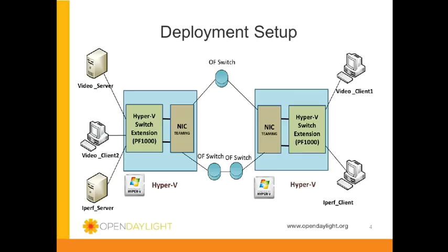The topology used in this demo is 2 Hyper-V servers H1 and H2 with PF1000 virtual switch. 3 OpenFlow switches simulated using MiniNet and connected to the Hyper-V. 5 VMs hosted using SCVMM. There are two servers: one is a video server and the second one is a Hyper-V server. Two video clients named video client 1 and video client 2 streaming video from the video server. One more client, Hyper-V client, connected to the Hyper-V server. NIC teaming has been enabled in both the Hyper-V servers to connect into the OpenFlow network.